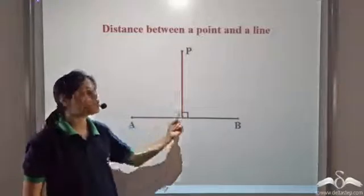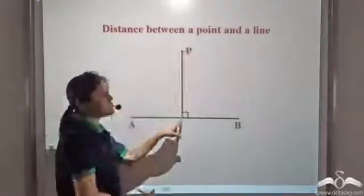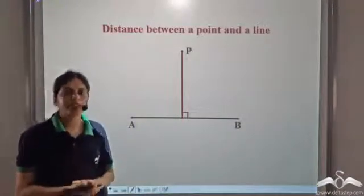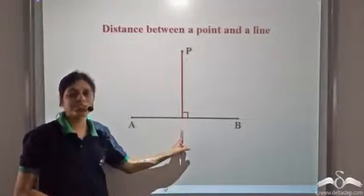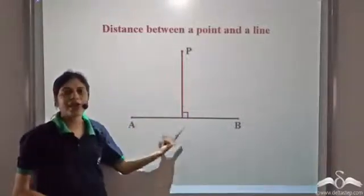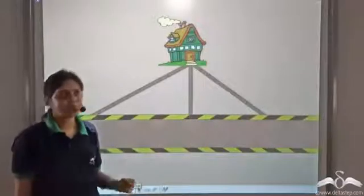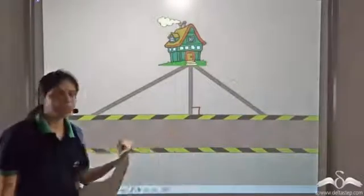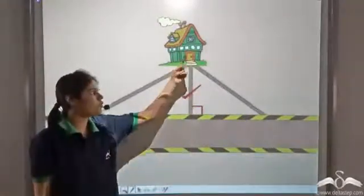The perpendicular distance is also the shortest path between point P and line segment AB. So if we need to find the distance between a point and a line segment, we draw a perpendicular from the point to the line segment — it gives the distance and also denotes the shortest path. Now can you say which route you should take? We see that this route is perpendicular to the street, so we should take this route as it is the shortest path from your home to the street.